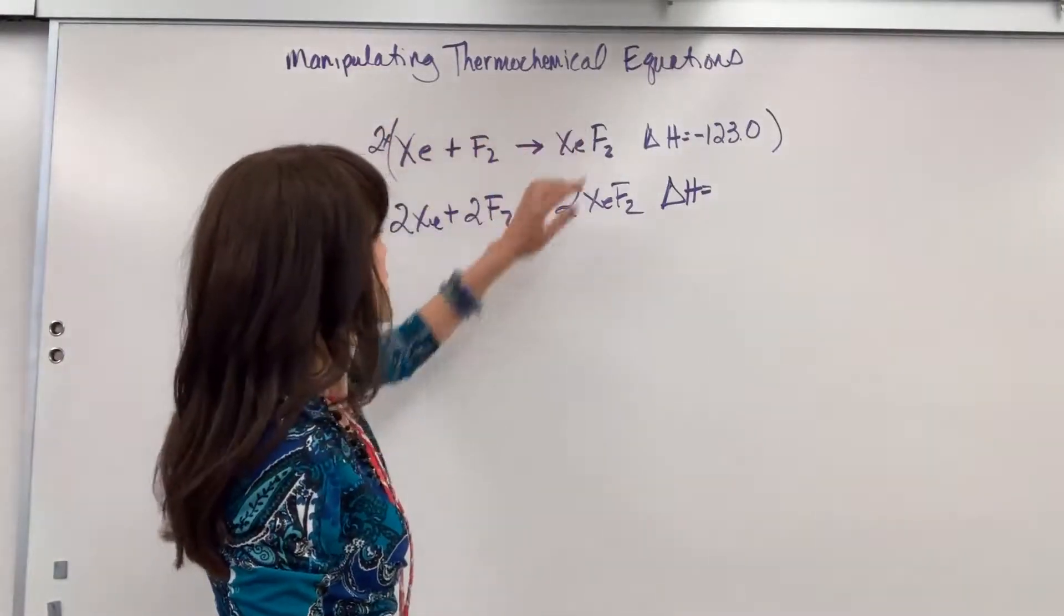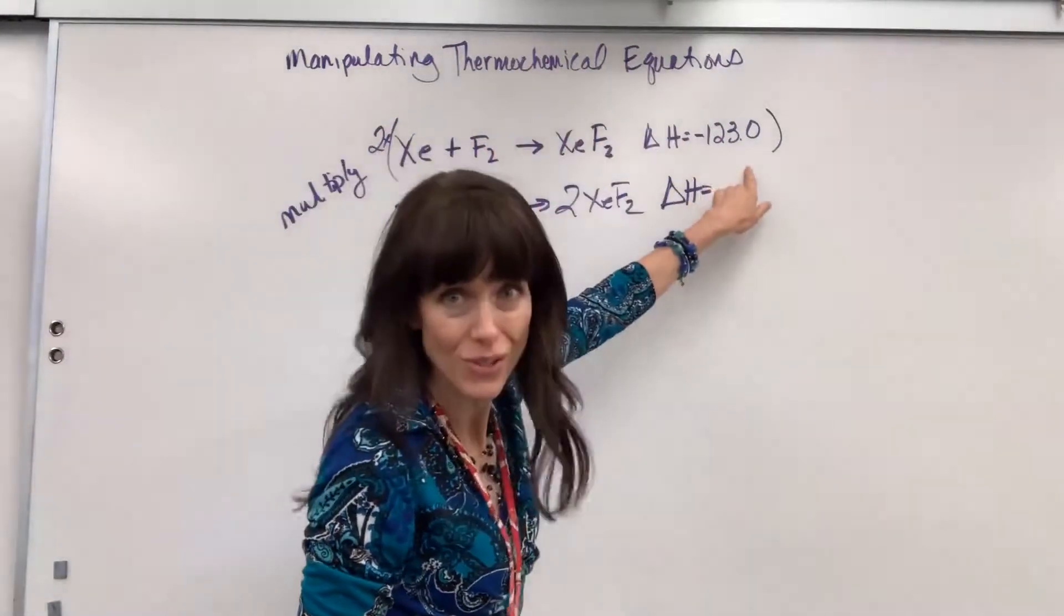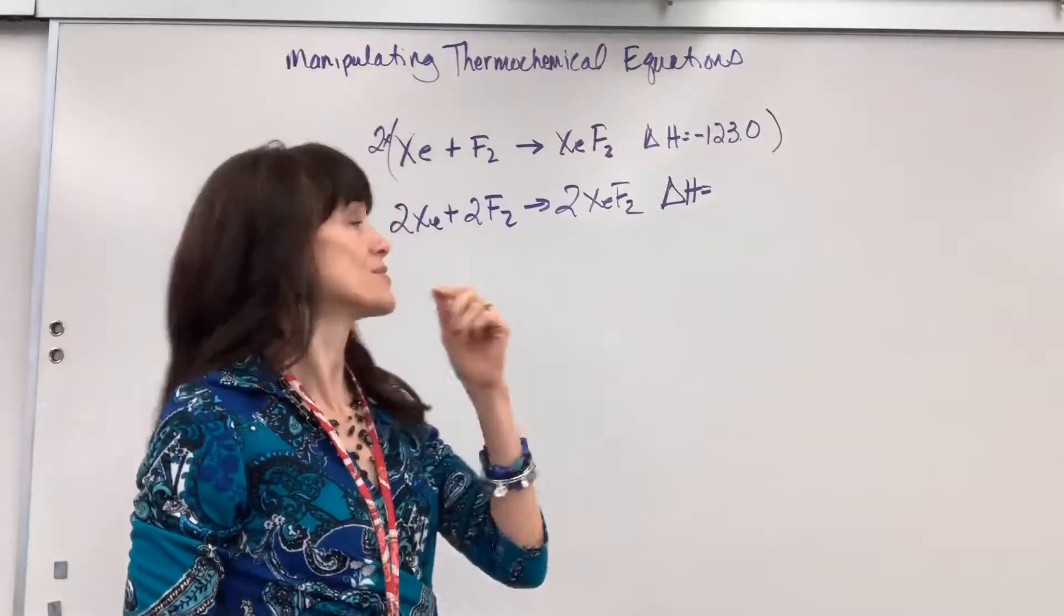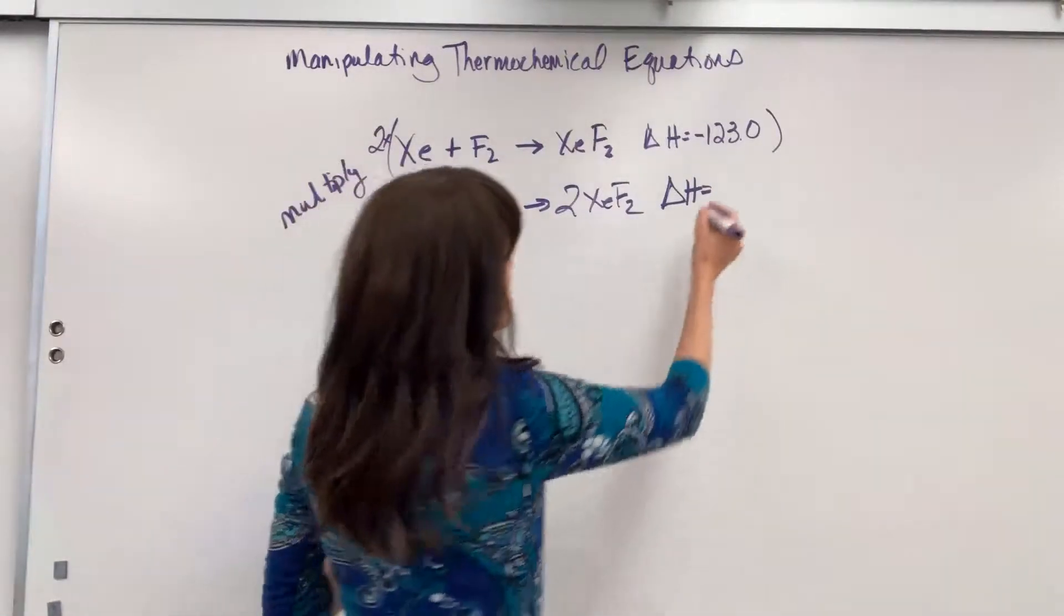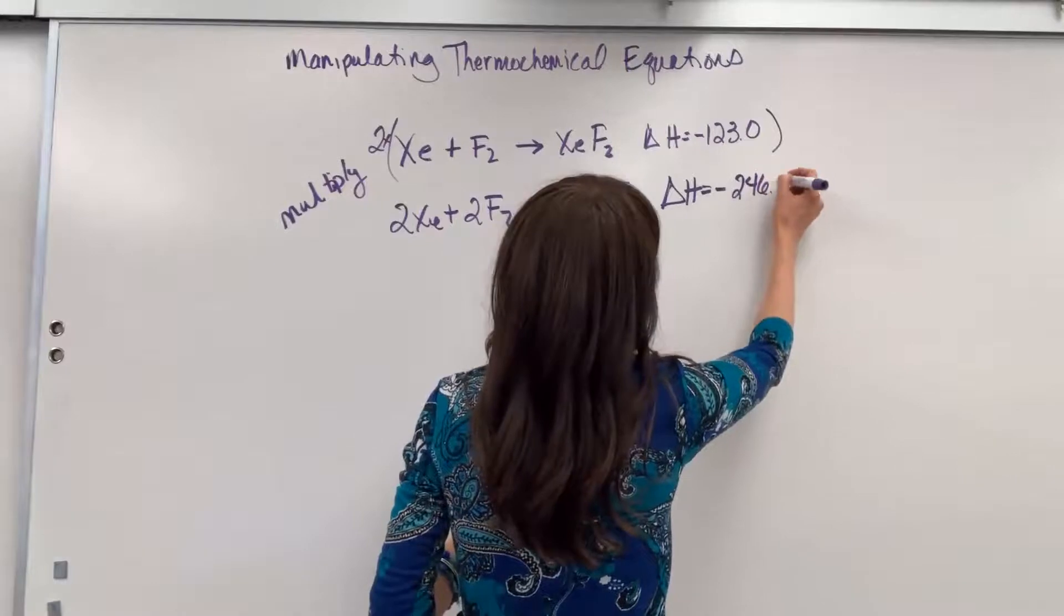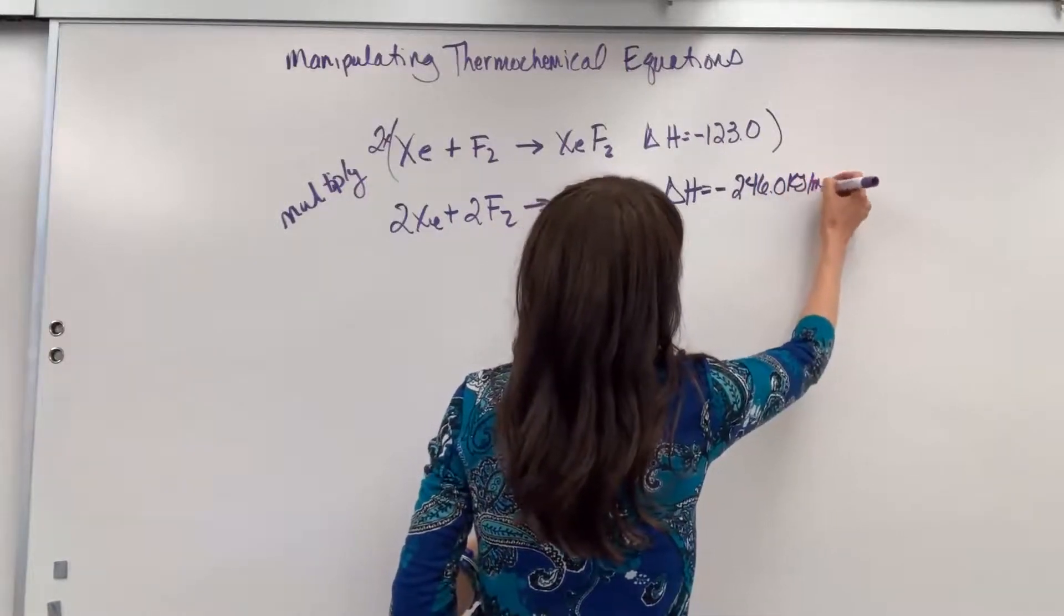So that two distributes not only to every coefficient, but also to the enthalpy. So two times negative 123 is going to give us negative 246 kilojoules per mole.